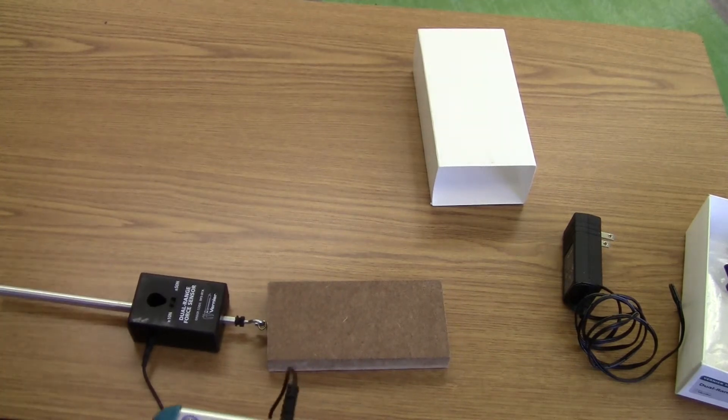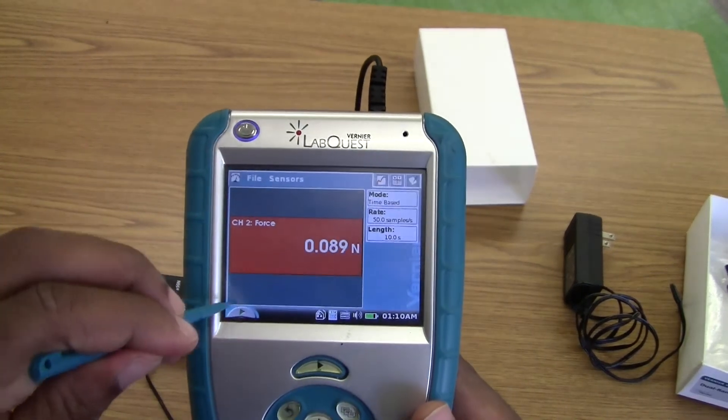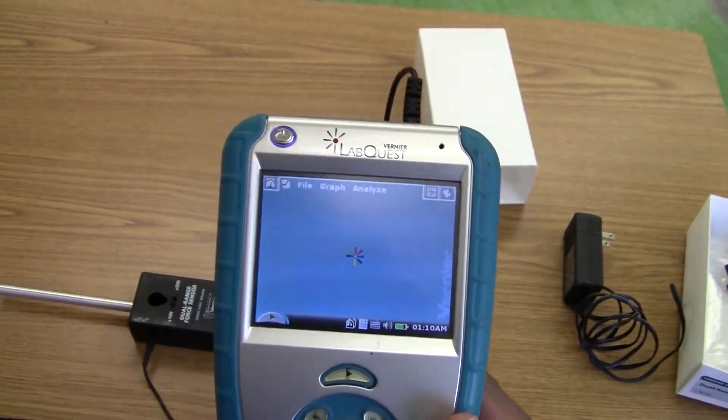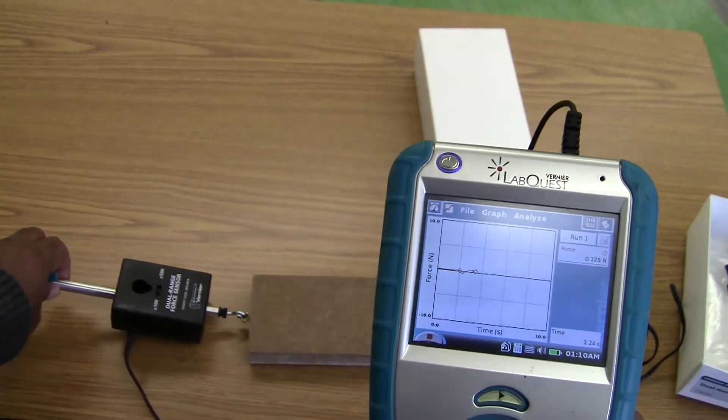Now when we're ready to actually record, we can press the little play button here and it's going to start measuring the friction. We can pull at the same time.